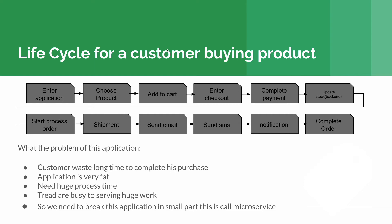Now let's look at the lifecycle of a customer buying a product after the e-commerce app is developed. First, a customer enters the application, browses the product list, and chooses the product they need. After choosing the product, they add it to their cart. Then they proceed to checkout, filling in their details such as address, full name, and mobile number, and then move to the payment step.